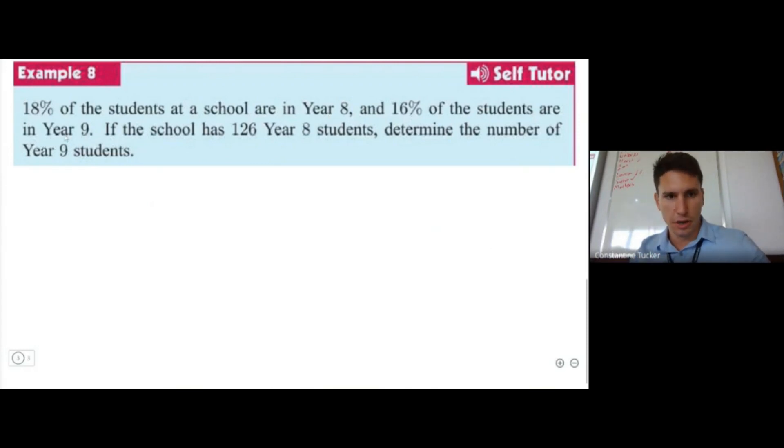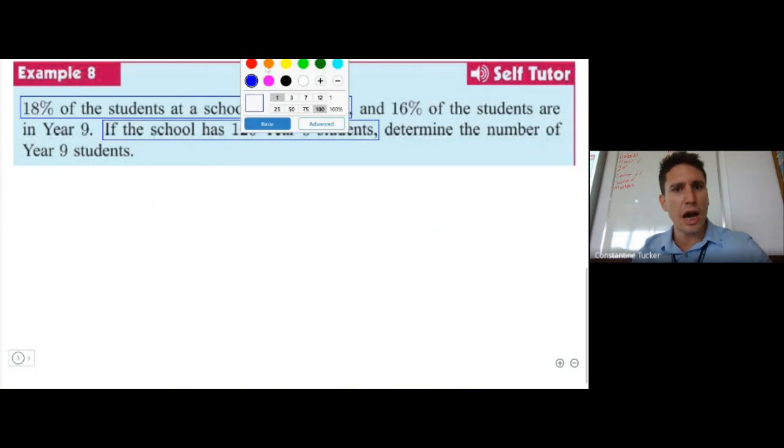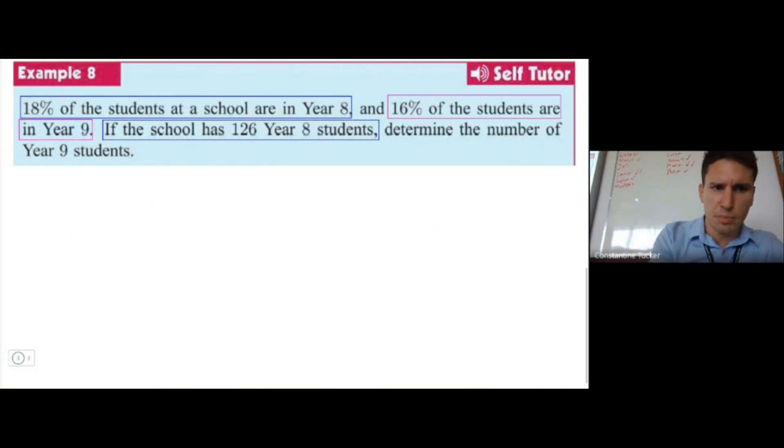So we know 18% of the students are in Year 8 and 16% of the students are in Year 9. Let's try to understand what they're saying. They're saying we have 18% of students in the school around Year 8, and those students are actually equal to 126. Let's keep that in mind. And then they're saying we have 16% of students in Year 9, and we don't know how much that is. How many students are there in Year 9? So let's try to put things in perspective: we know 18% of students, well that is equal to 126.